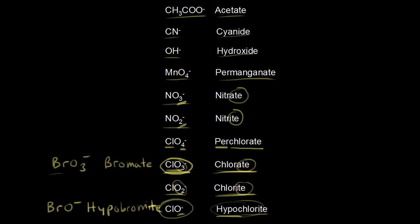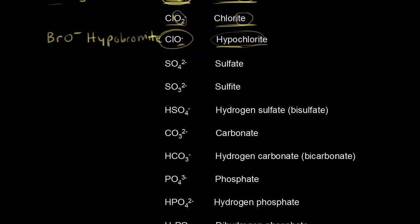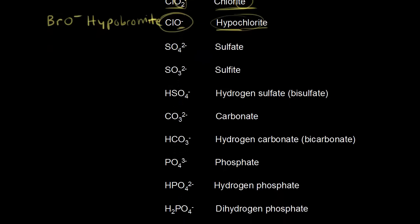Let's look at our next set of polyatomic ions. So we have SO4 2 minus is called sulfate. So we have our eight ending. And then we have four oxygens. So if we go to three oxygens, SO3 2 minus, this is sulfite. Because ite means fewer oxygens.